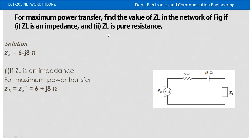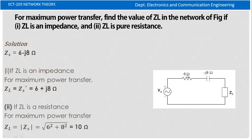The third condition: ZL is pure resistance. For this condition, ZL equals the magnitude of Zs. The magnitude of Zs equals the square root of 6 squared plus 8 squared, which equals 10 ohm.